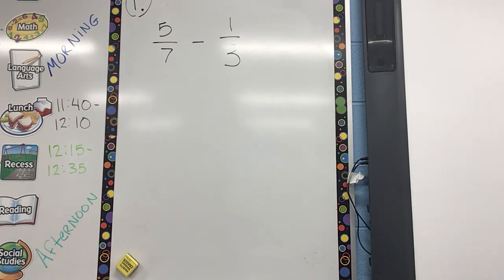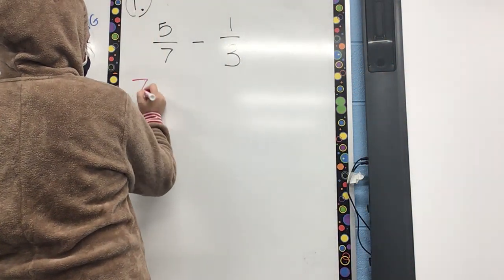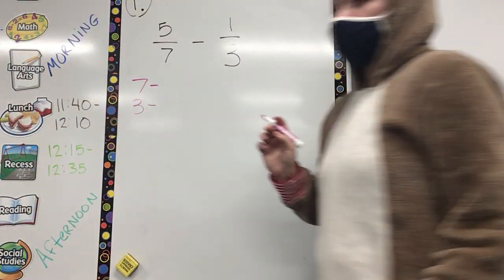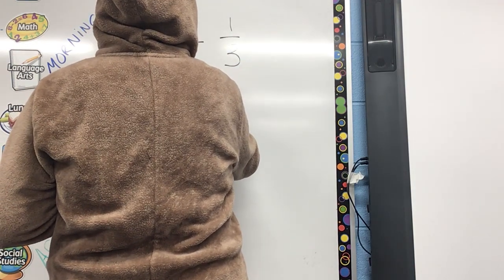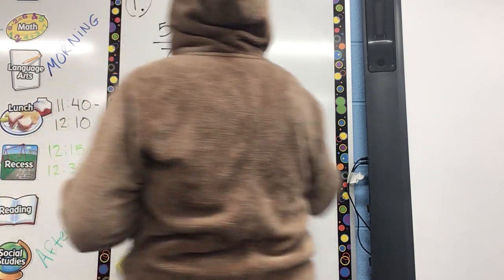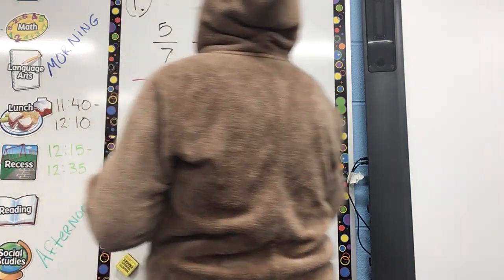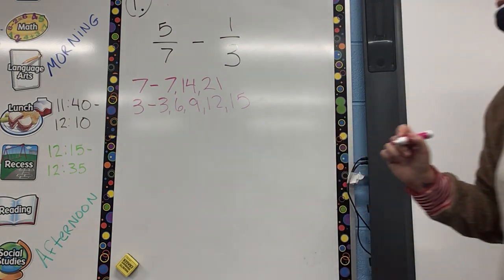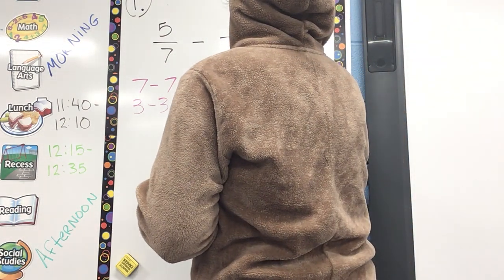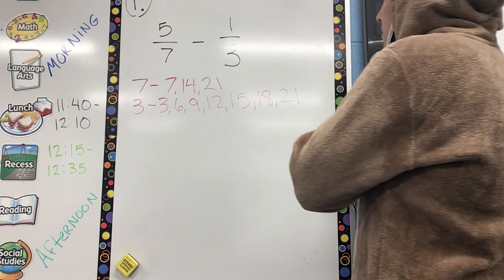Step one: line up our fractions. I actually usually leave mine going horizontally. Step two: do we have like denominators here? No, we can't add or subtract them when they're different. So we need to make a list of multiples. Multiples of 7: 7, 14, 21. Multiples of 3: 3, 6, 9, 12, 15, 18, 21. What is going to be my new least common denominator? 21.